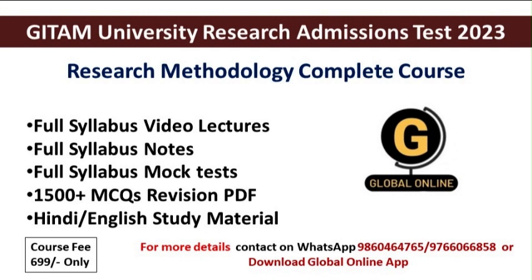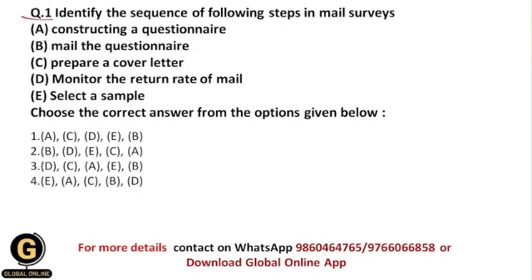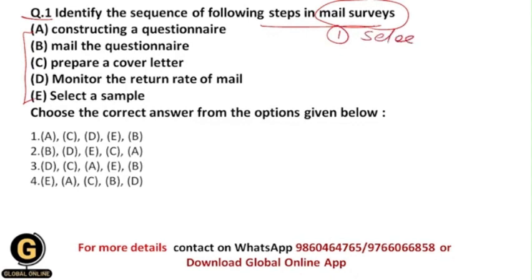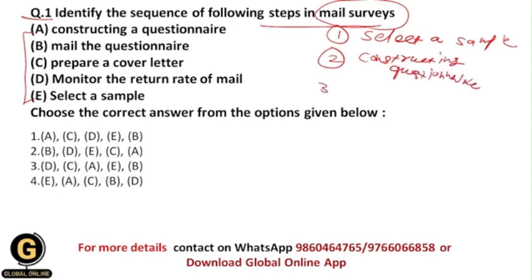The first question is: identify the sequence of the following steps in mail surveys. You have been given five steps of mail surveys and we are going to arrange them sequentially. In mail surveys, the survey is administered through mail — we ask questions to our respondents through mail. The first step is to select a sample, and the second step is constructing a questionnaire.